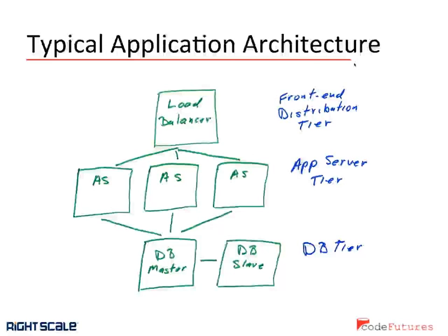I want to walk through a typical application architecture and talk about how we apply scalability to each layer. Today's online applications have a load balancer at the front end, which takes in requests and balances them across a number of application servers. Then we have the database tier, typically done in a master-slave architecture. The application servers talk to the database, get the information, and report it back through the load balancer.